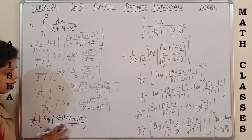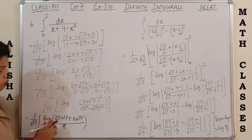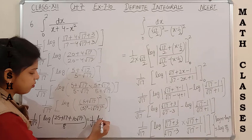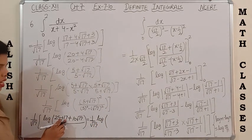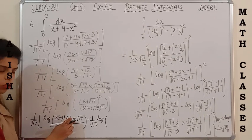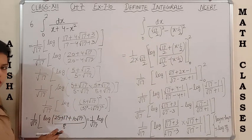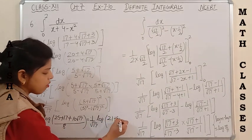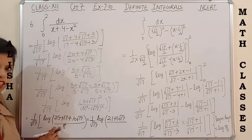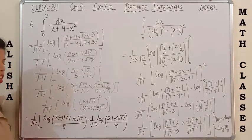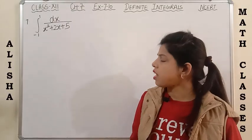25 minus 17 is 8, so we write 8 in the denominator. In the next step: 25 + 17 = 42, plus 10√17; since 42 and 10 both have factor 2, taking 2 common from numerator and denominator, and cancelling 2 gives 4 in denominator, yielding (1/√17) × log[(21 + 5√17)/4]. This is the answer. Please note down.